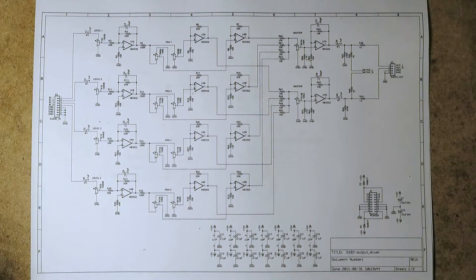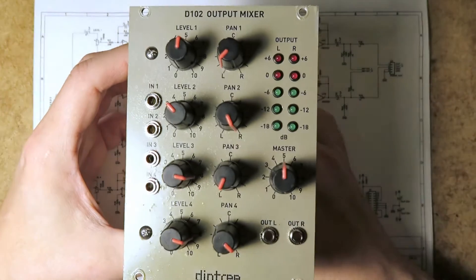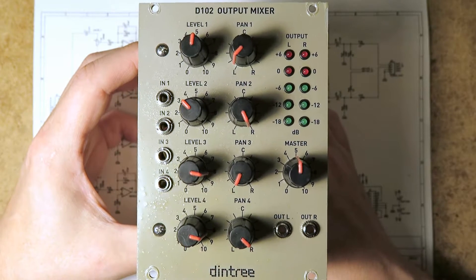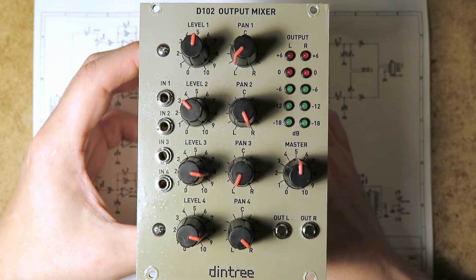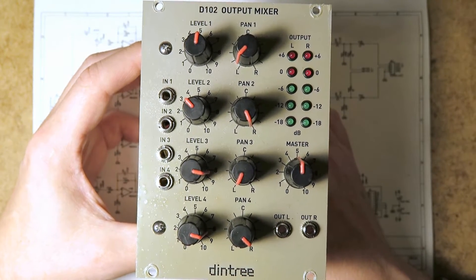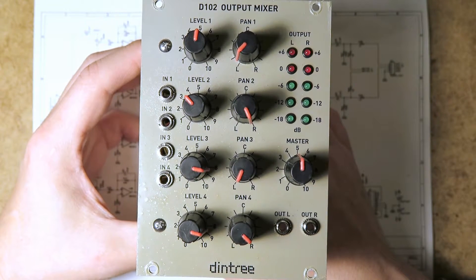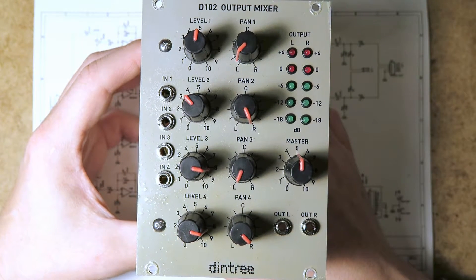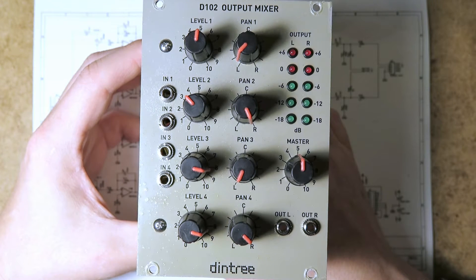Hi folks, it's Andrew here and today I would like to tell you about this module. This is the D102 output mixer module and it's a little DIY module that I built for my Eurorack system in 2011. And I want to give you a little bit more insight into how it works.